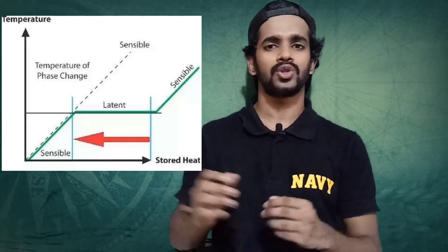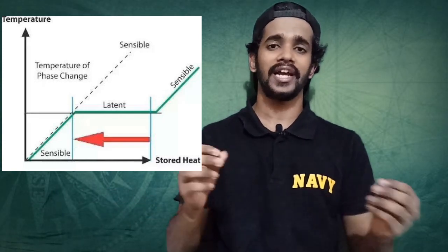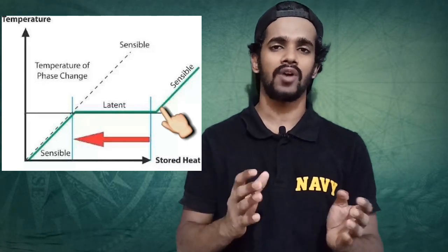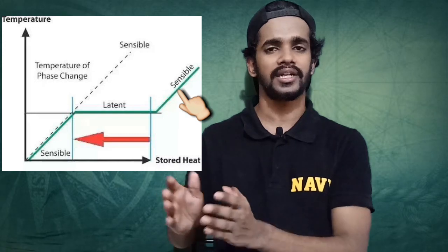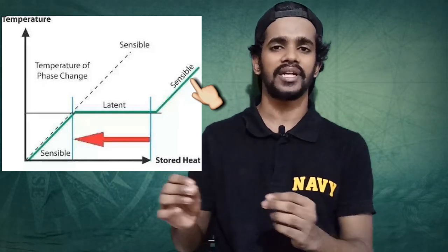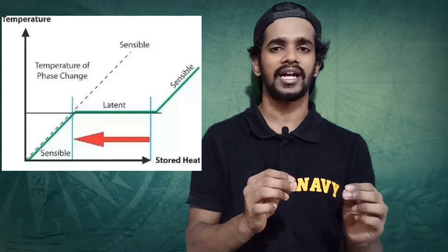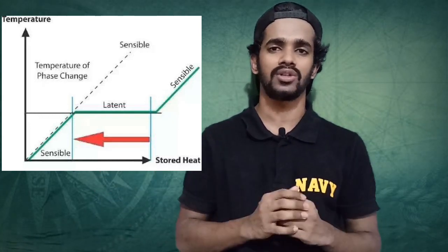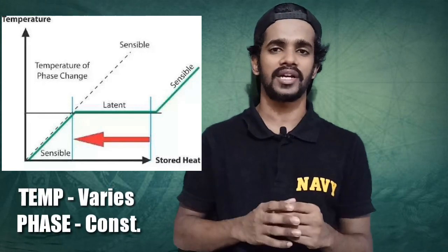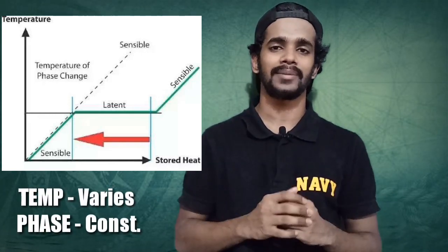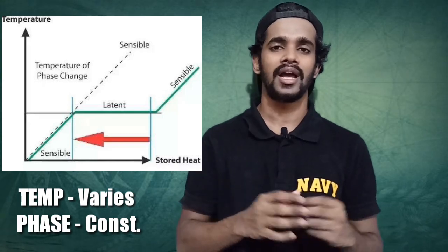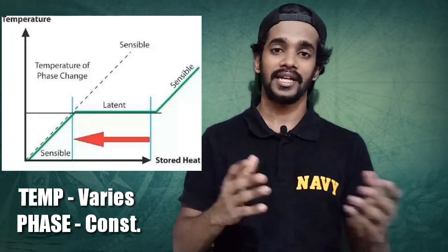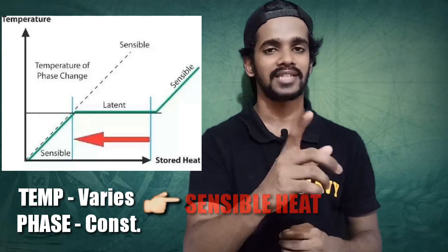Now the water has been transformed to water vapor. If we again heat the water vapor, there will be an increment in temperature from 101 to 102, 103 to 104, and so on. As we add more heat to the water vapor, the temperature keeps on varying, but the phase here remains constant. So as the phase remains constant and the temperature is varying, the heat being added is known as sensible heat.